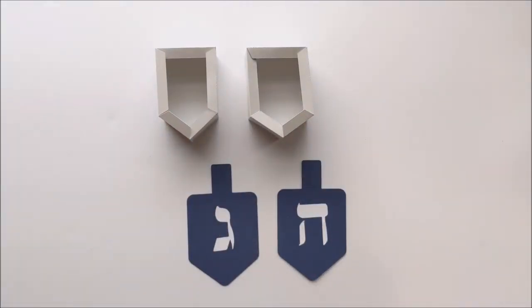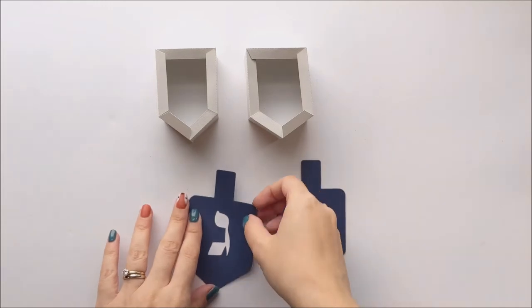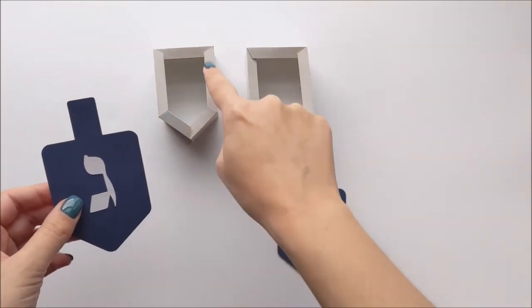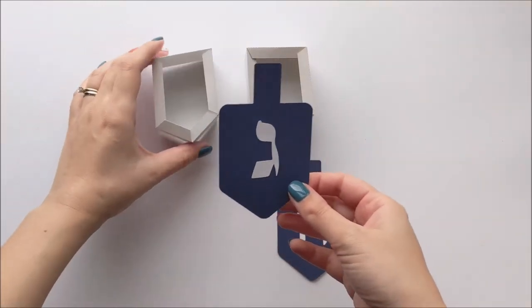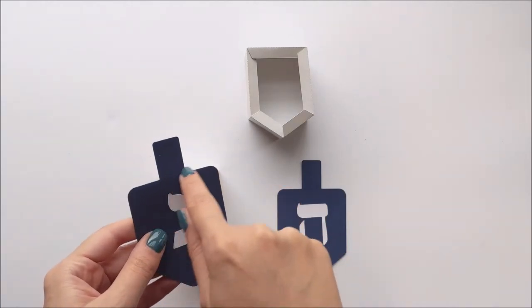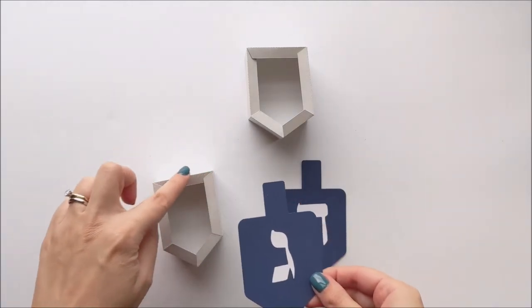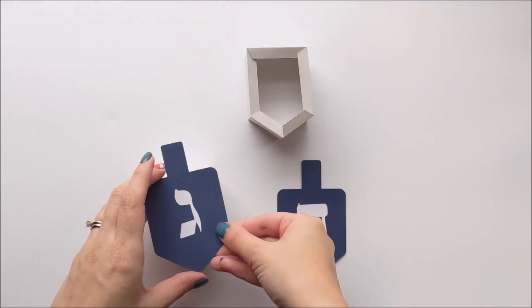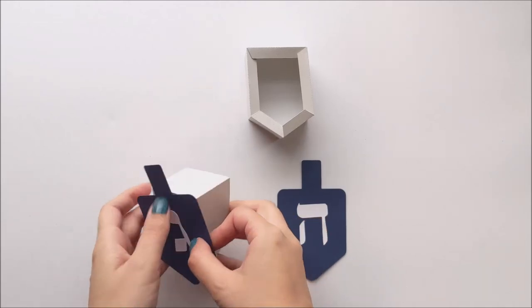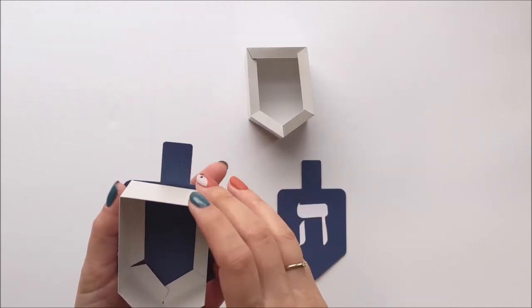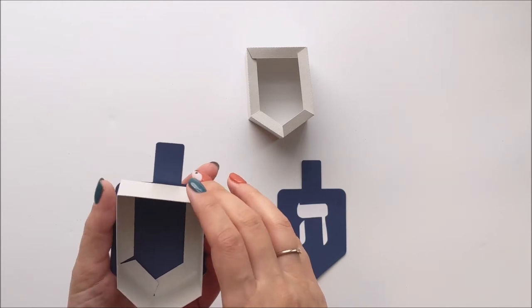Next, we're gonna glue a dreidel to each one. So we're gonna use these tabs here to affix the dreidel. And how you're gonna align it is this flat edge here of the dreidel, we're gonna align that to this top flat edge there. So we're just gonna align those up. And when you put that down, just make sure that you're gluing the dreidel to the middle.